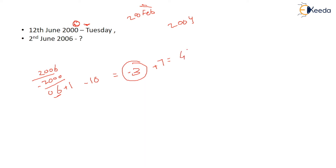After adding 7, it comes out to be 4. So you have to add 4 more days. Tuesday is day zero, then Wednesday, Thursday, Friday, Saturday. So 2nd June 2006 will be Saturday.